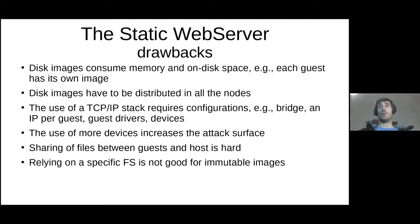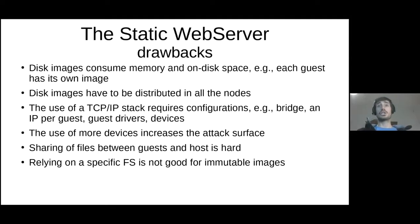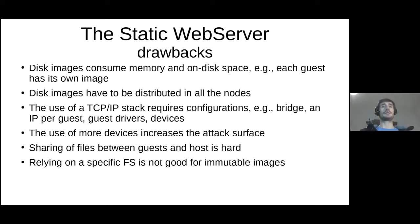Let's summarize the main drawbacks of this configuration. First, the images consume memory and disk space — each guest has its own image that has to be distributed to all nodes. The use of a TCP/IP stack requires configuration like bridge and IP port per guest, guest drivers, and devices. Also, the use of more devices increases the attack surface. Sharing files between guest and host is most of the time hard and complicated, and relying on a specific file system in the guest is not good for immutability in a microservice mesh.